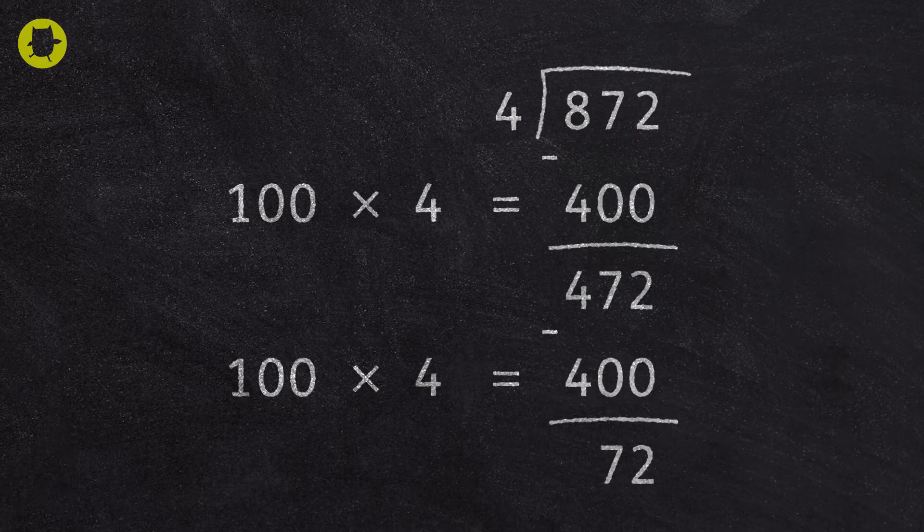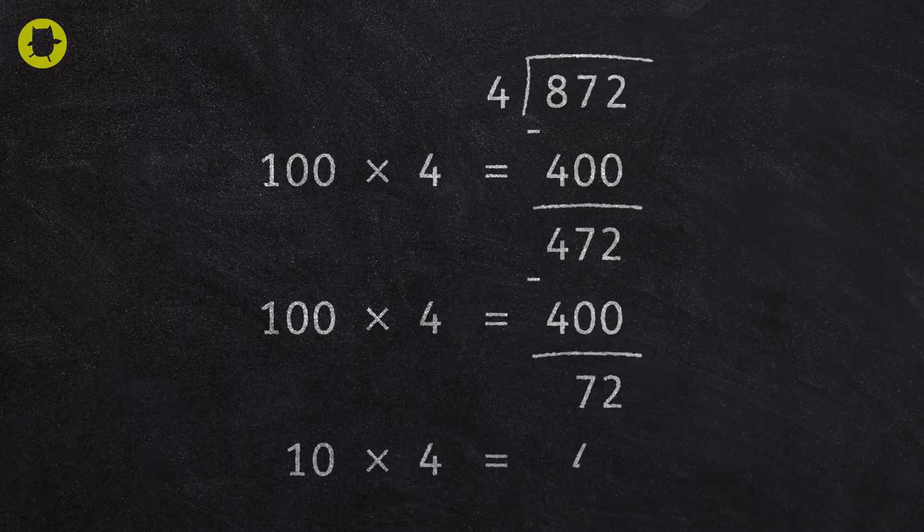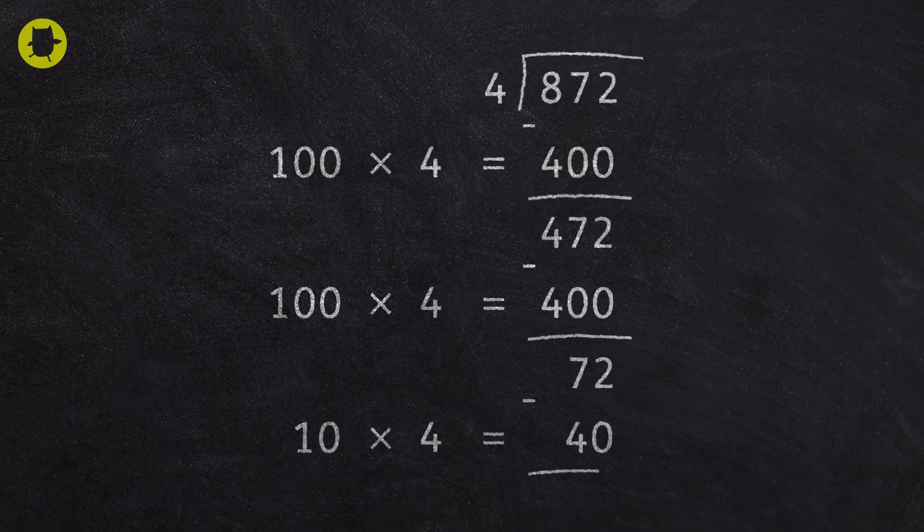Next, we have to look at how many fours there are in 72. If we think about our four times table, we know that 10 multiplied by 4 is 40. So we subtract 40 from 72 and we're left with 32.